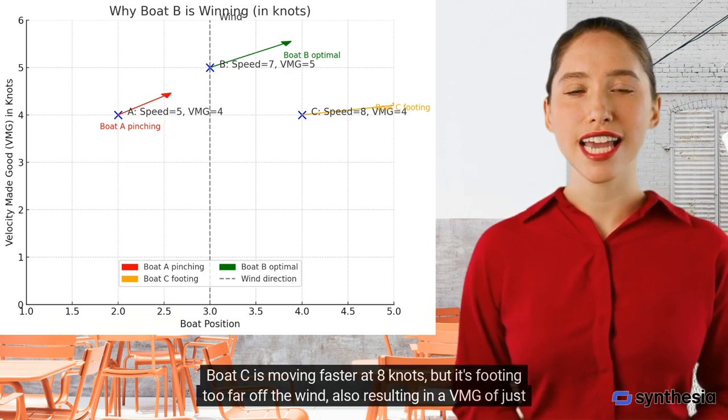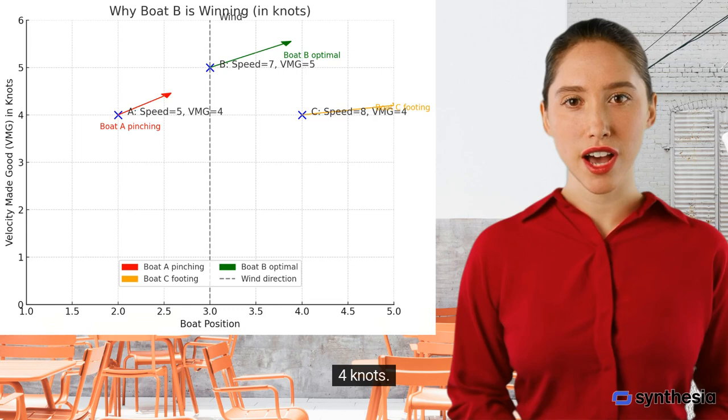Boat C is moving faster at 8 knots, but it's footing too far off the wind, also resulting in a VMG of just 4 knots.